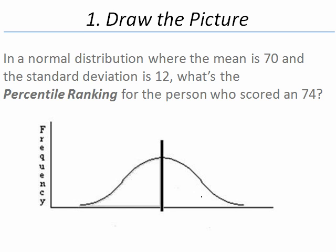For our question we are asked: in a normal distribution where the mean is 70 and the standard deviation is 12, what is the percentile ranking for the person who scored a 74?